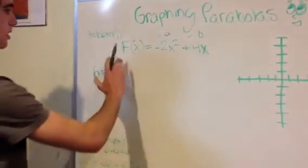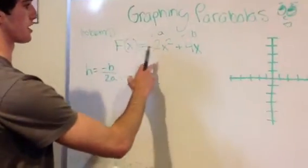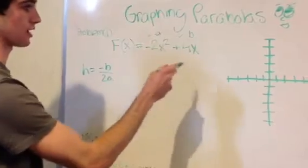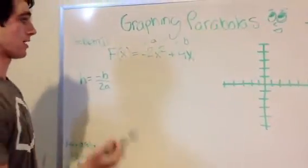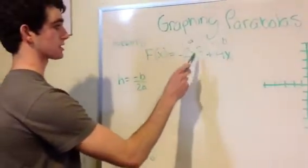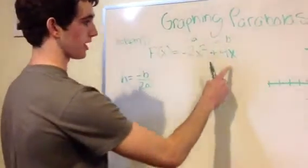Looking at this problem right here, fx equals negative 2x squared plus 4x, we're going to identify our a and b. Negative 2x squared is our a, 4x is our b.